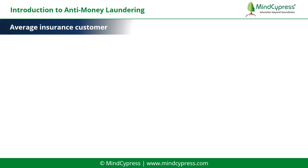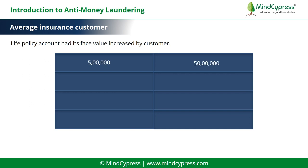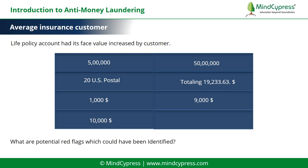What are the potential red flags which could have been identified? Case 4 — Customer description: Average insurance customer. Scenario: A life policy account had its face value increased by the customer from $5 million to $50 million. Shortly after the face value increase, the client deposited 20 U.S. postal money orders totaling $19,233.63. The client was purchasing the money orders on the same day from multiple post offices. The client also deposited a $1,000 personal check with a batch of $9,000 in multiple money orders, keeping amounts under the reporting threshold of $10,000.